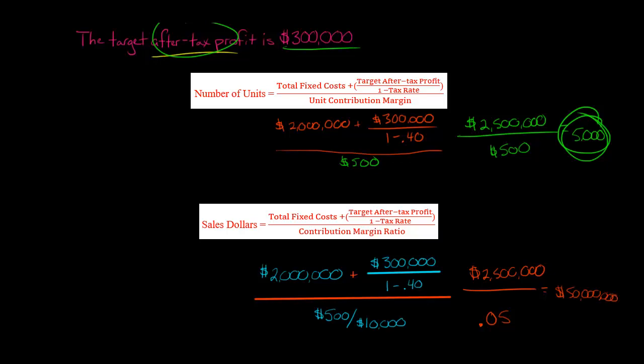To summarize: if the goal is an after-tax profit of $300,000, this company needs to sell 5,000 units. Another way to express it is that they need to hit $50 million in sales. If the company hits $50 million in sales, they'll achieve an after-tax profit of $300,000.